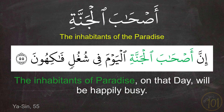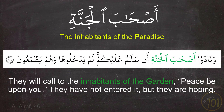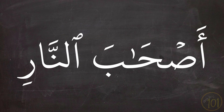The Quranic examples shown include: إِنَّ أَصْحَابَ الْجَنَّةِ الْيَوْمَ فِي شُغُلٍ فَاكِهُونَ — 'Indeed the inhabitants of paradise today are happily occupied' — and وَنَادَوْا أَصْحَابَ الْجَنَّةِ أَنْ سَلَامٌ عَلَيْكُمْ لَمْ يَدْخُلُوهَا وَهُمْ يَطْمَعُونَ.